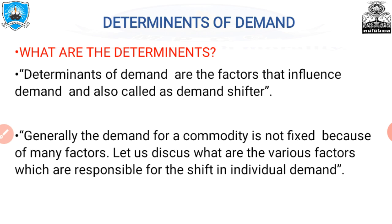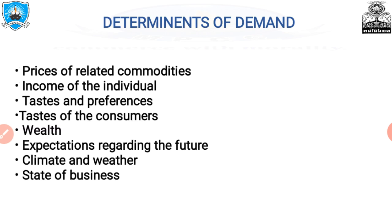The very first determinant is the price of related commodities. When a change in price of one commodity leaves the amount demanded of another commodity unchanged, we say the two commodities are unrelated; otherwise they are related. Related commodities are of two types: substitutes and complements. When the price of one commodity and the quantity demanded of the other commodity move in the same direction — both increase together and both decrease together — they are substitutes.